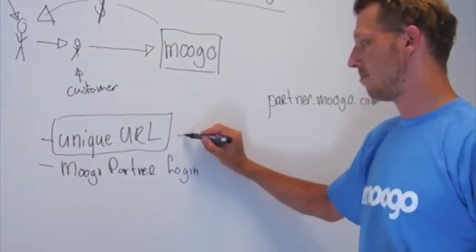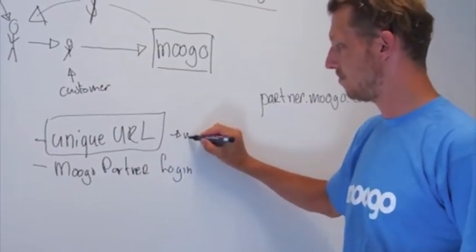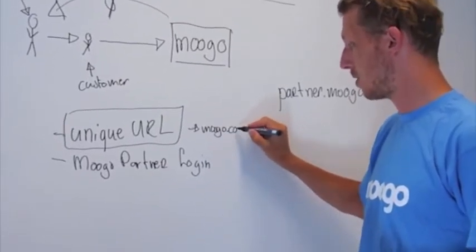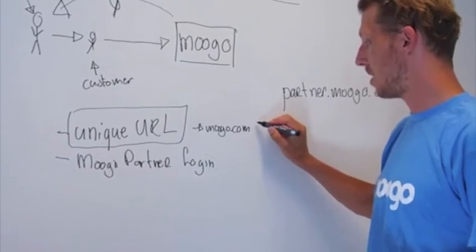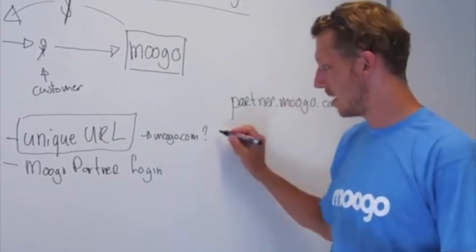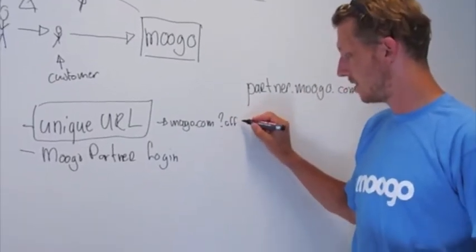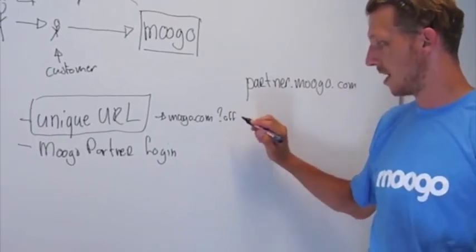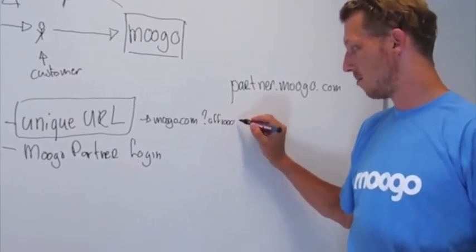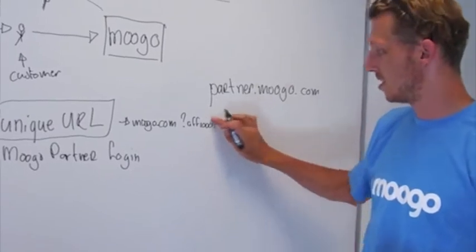This unique URL is the key of the Mugro Partner Program. It consists of Mugro.com or any page on the Mugro.com where you would like to refer to, followed by the special parameter which starts with a question mark and some letters and numbers. Something like AFF and then your affiliate number, so let's say 1001. I'm not exactly sure what number you get.